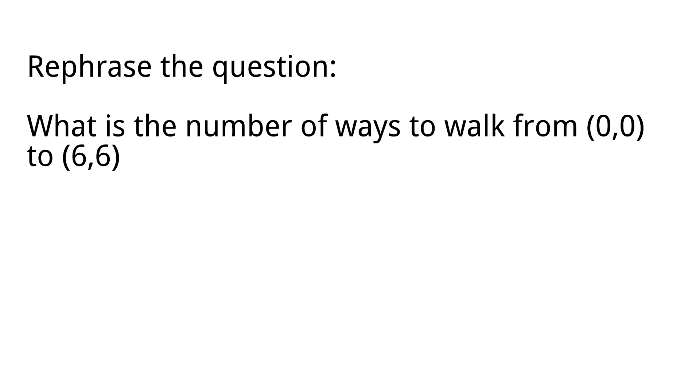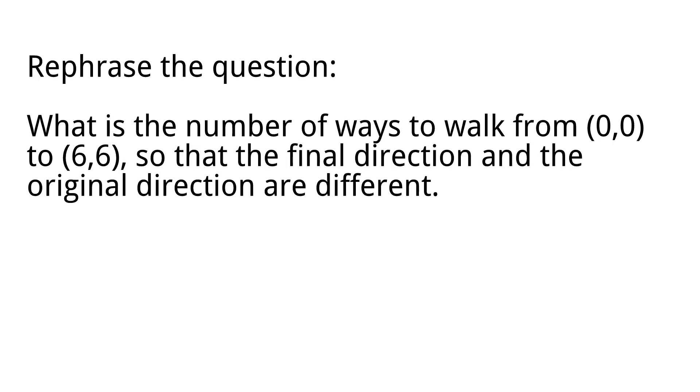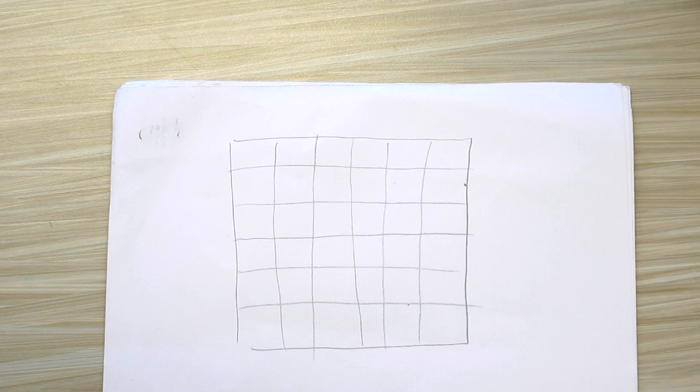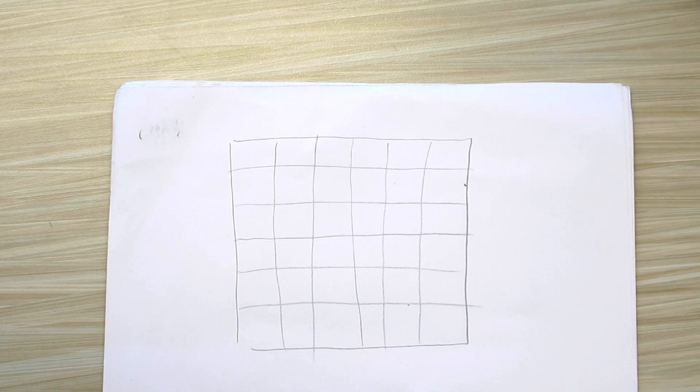And the original question asks, what is the number of ways to travel from (0,0) to (6,6) with odd number of turns? That can be rephrased as, how many ways to travel from (0,0) to (6,6) so that the original direction and the final direction are different. And that's the first step to simplify the condition. So we want to turn odd number of times, which means the final direction and the original direction are different.